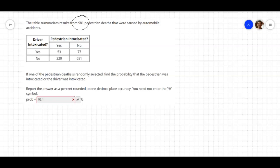The pedestrian was intoxicated or the driver was intoxicated. Okay, so these 220 people, the pedestrian was intoxicated. These 53 people, both of them were. And these 77, the driver was. So the probability would be all of these people - that's how many people are in either one or the other category. The 53 are in both, but we don't count them twice.